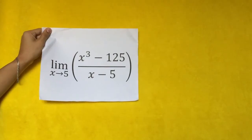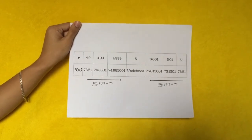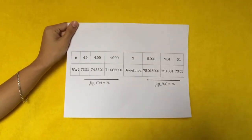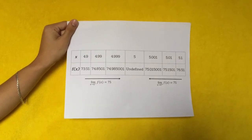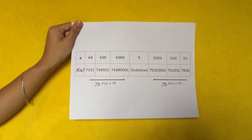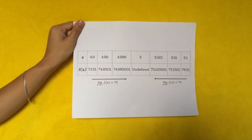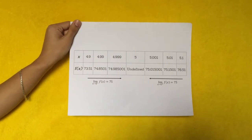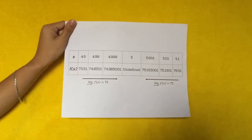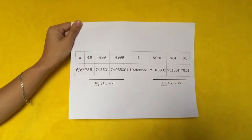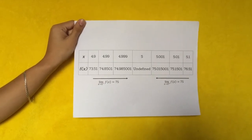Let's consider an example using the following function. To create the table, we evaluate the function at values close to x equals 5. We use some input values less than 5 and some values greater than 5. The table values show that when x is greater than 5 but nearing 5, the corresponding output gets close to 75. Because the limit of f of x as x approaches 5 from the left and the limit as x approaches 5 from the right are both equal to 75, the limit of f of x as x approaches 5 is equal to 75. Remember that f of 5 does not exist.